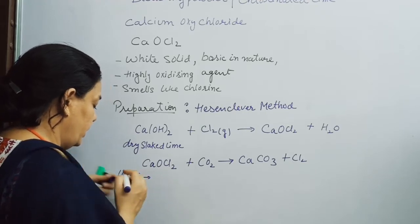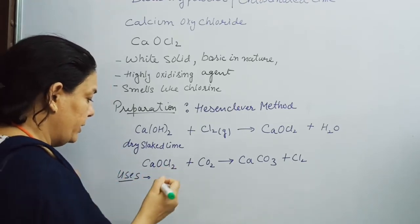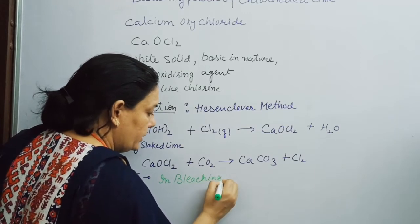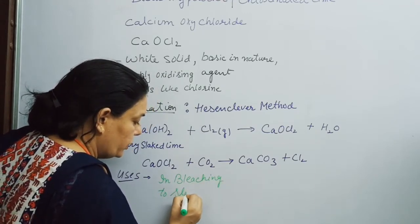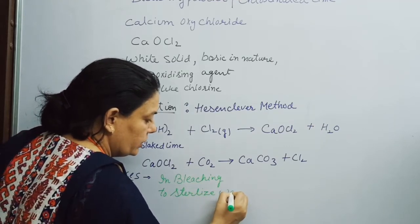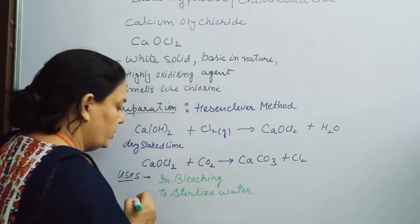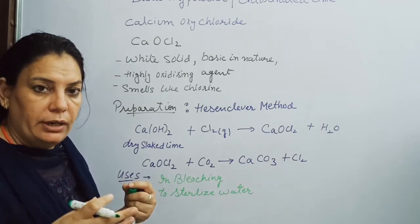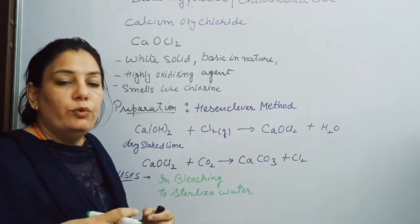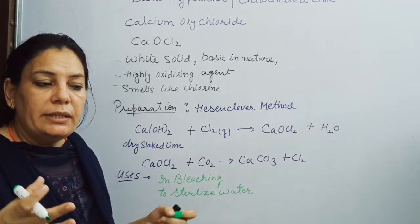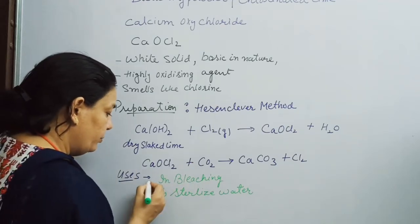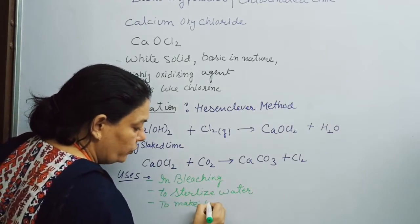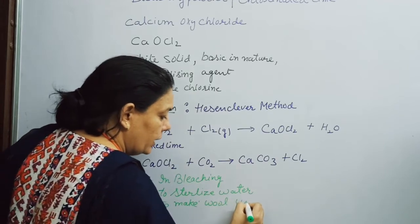Some uses of Calcium Oxychloride: First, it is used for bleaching purposes — to bleach fabrics in the bleaching industry. Second, it is used to sterilize water. Third, this salt is mainly used to make wool unshrinkable — when applied to woolen clothes, they become unshrinkable and their size does not shrink.